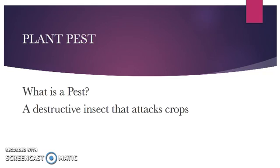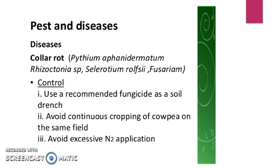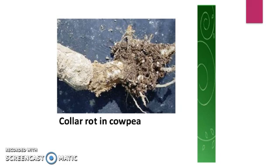The pests and diseases of cowpea are as follows. The first disease we will look at is collar rot. Its characteristics include oval or spindle-shaped brown-black lesions having a length ranging from 0.2 to 8 centimeters at soil level near the collar region, girdling the basal portion of the stem. You can control this disease by applying a recommended fungicide as a soil drench, avoiding continuous cropping of cowpea on the same field, and avoiding excessive nitrogen application.